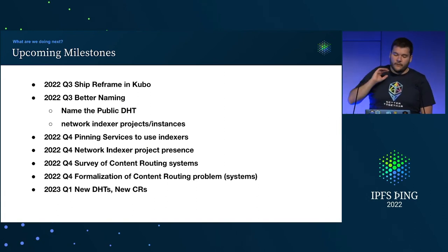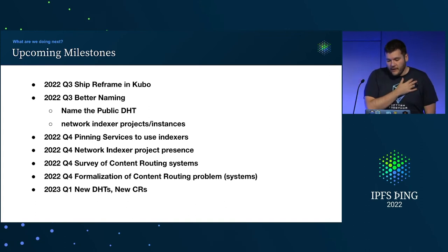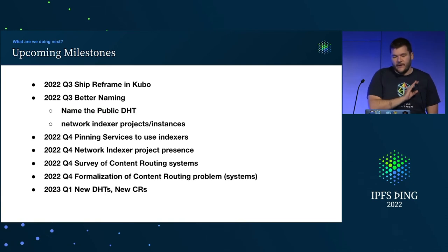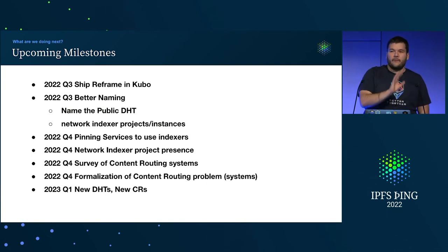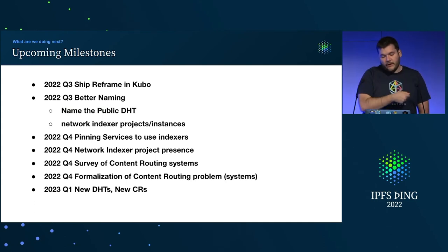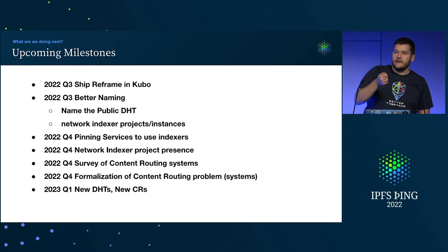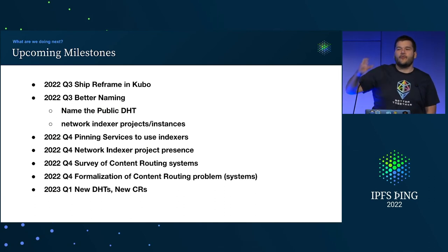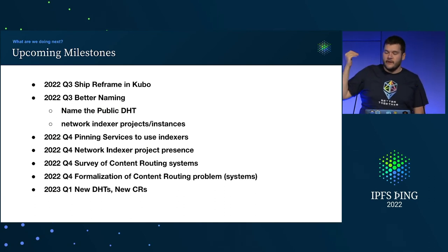Separate from indexers, we need to do a survey of content routing systems — pulling up the CCN and NDN and other literature, looking at a bunch of protocol space, and figuring out where there are really good protocol ideas that we can leverage. From there we should arrive at a new formalization of content routing given content addressing, since a lot of the CCN and NDN literature wasn't built on top of hash-linked content addressing.